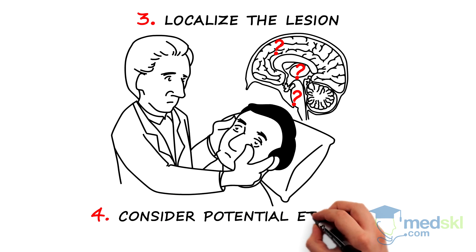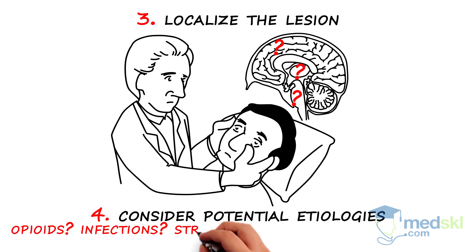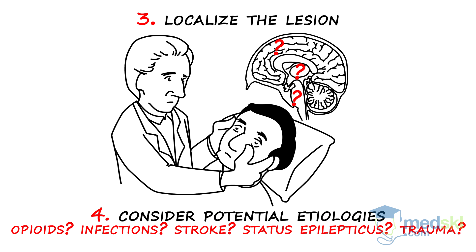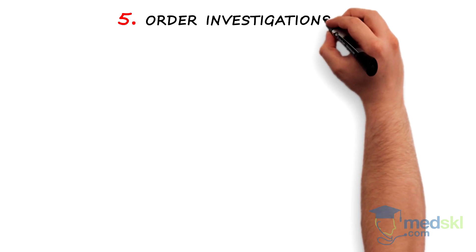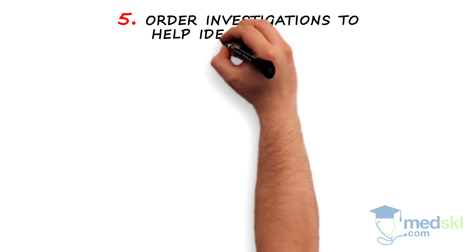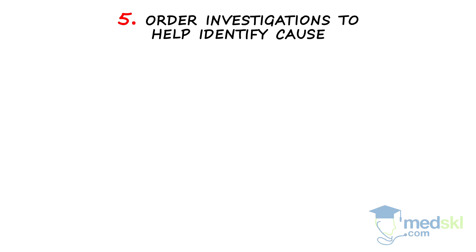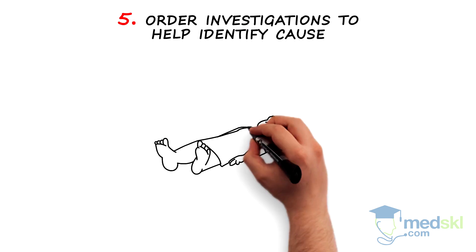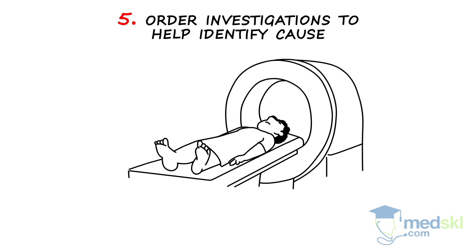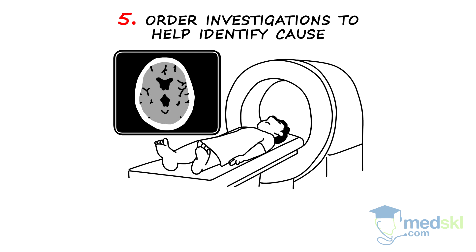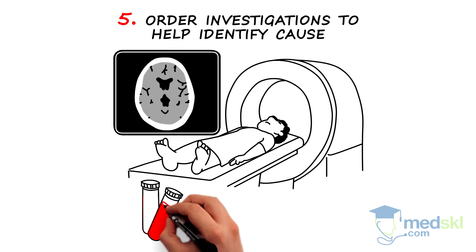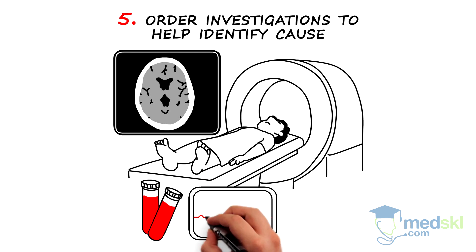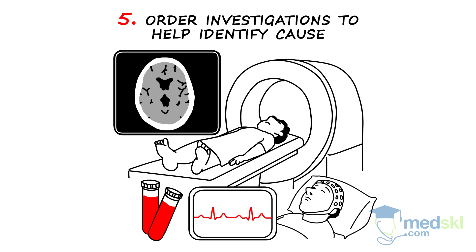Consider the potential etiologies based on your localization. Order investigations to help you identify the cause of the coma. Obtain a CT scan of the brain as soon as possible. Blood work, ECG, and EEG may also be helpful.